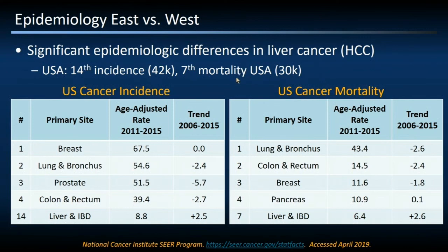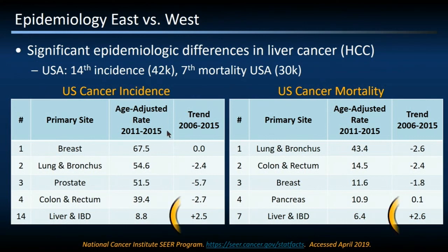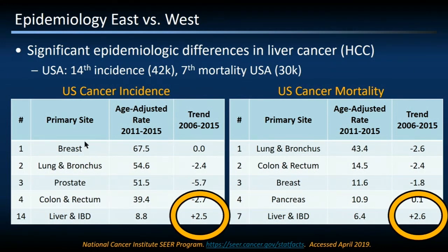Some might ask why we spend all this time and money researching and developing strategies for diagnosing and treating such a low-incidence cancer. But if you look into the data from the NCI SEER program, you can find some interesting answers. Looking at the trend line for some of the most common cancers in the United States — like breast, lung, prostate, and colon — over the past 10 years there's been a dramatic decline in both incidence and mortality of those cancers.